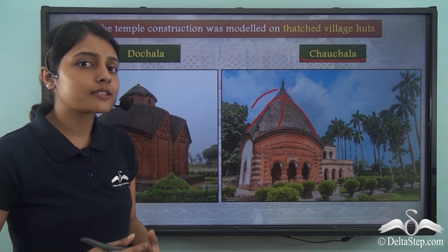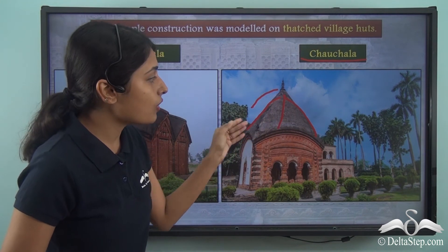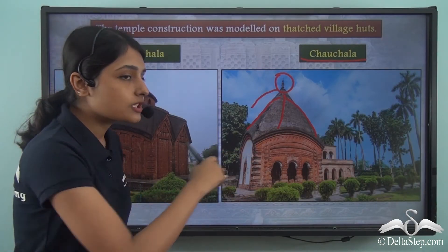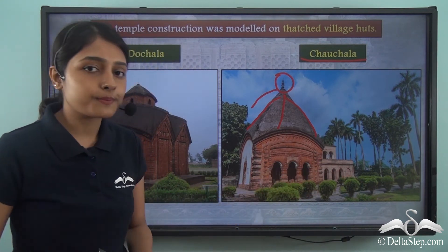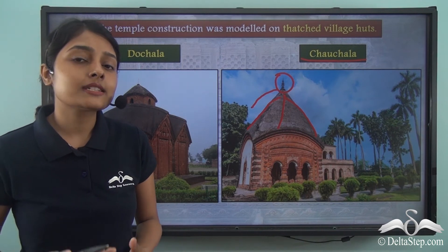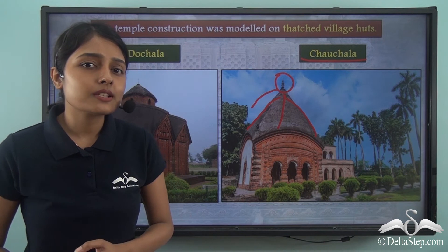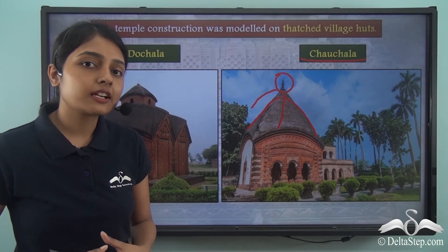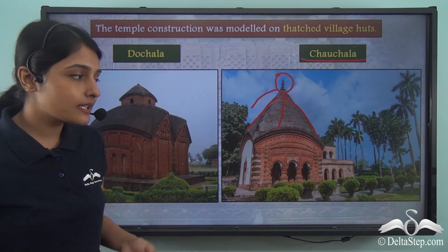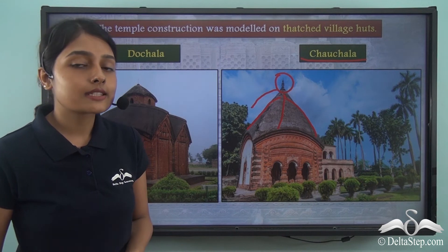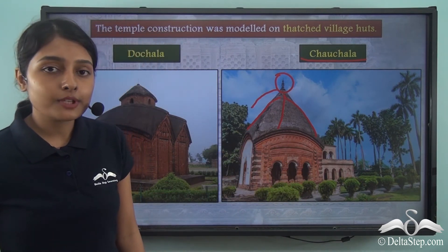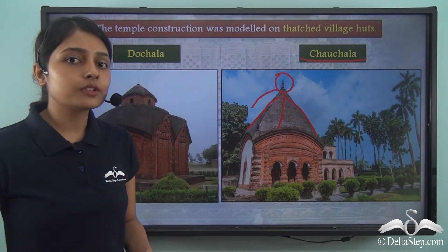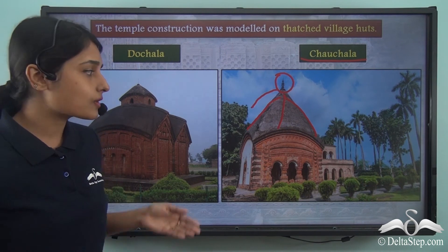Now in the Chao Chala temples there is a distinctive stylistic feature: all these four walls converged into a single point. Now both the Dochala and Chao Chala temples were constructed on square platforms. These temples were made of brick and terracotta. Now earlier on most temples throughout the Indian subcontinent were mostly made of stone. But in order to preserve their cultural heritage and tradition, these lower caste members constructed these temples with brick and terracotta. Now on the walls of these temples, terracotta sculptures or terracotta engravings were also made, which testify to the mastery and artistry of the craftspersons who constructed these temples.